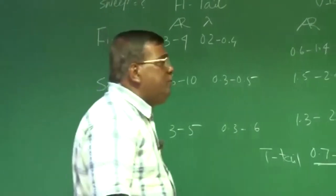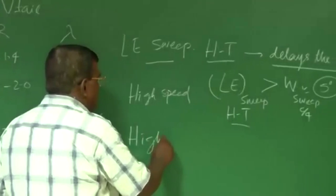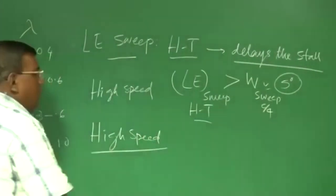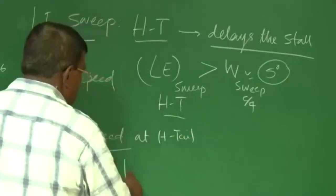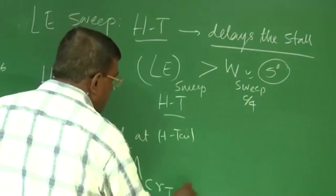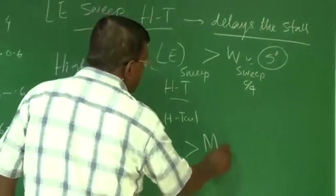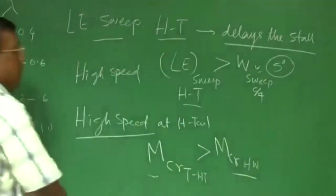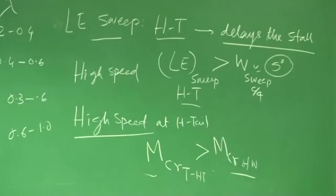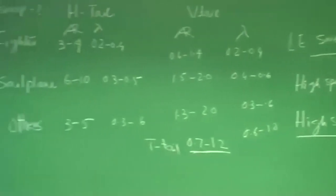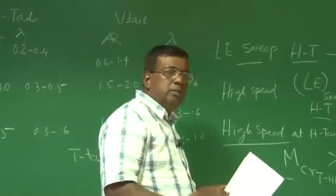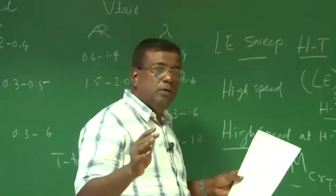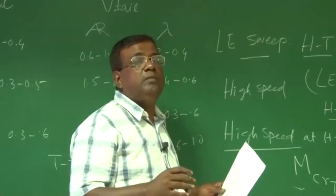But for high speed aircraft, you have the added requirement of sweep at the horizontal tail. You want to ensure that M-critical at the horizontal tail is greater than M-critical of the wing. This is important because if the first point on the tail reaches Mach 1, shock starts forming, effectiveness goes down, drag increases, and control power is affected. These are the basic understandings to draw an initial conceptual sketch; the exact values must come from thorough CFD analysis or wind tunnel validation.